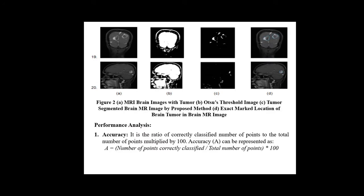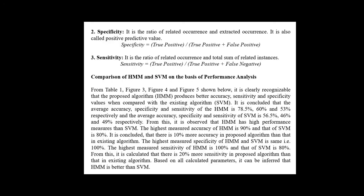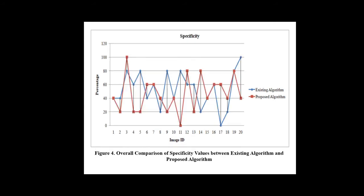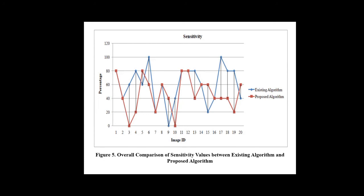Three performance analysis metrics are accuracy, specificity, and sensitivity. A graphical representation of accuracy is given between the existing and proposed algorithm. It also shows the graphical representation of specificity and sensitivity between the existing and proposed algorithm.